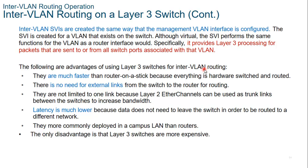There are several advantages of using a layer 3 switch for inter-VLAN routing. Layer 3 switches are much faster than router on a stick. There is no need for external links from the switch to the router for routing. They are not limited to one link because layer 2 EtherChannels can be used as trunk links between switches to increase bandwidth. Latency is much lower because data doesn't need to leave the switch in order to be routed to a different network — you cut out the middleman. This is more commonly deployed in a campus LAN rather than routers.